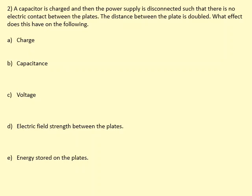The capacitor is charged, then the power supply is disconnected so there is no electric contact between the plates. This means Q is constant and fixed, because no charge can flow — it's all stuck on the plate. The distance between the plates is then doubled. Charge: no change, since it's stuck. For capacitance, using C = ε₀εᵣA / d, with area and dielectric unchanged, capacitance is inversely proportional to distance.